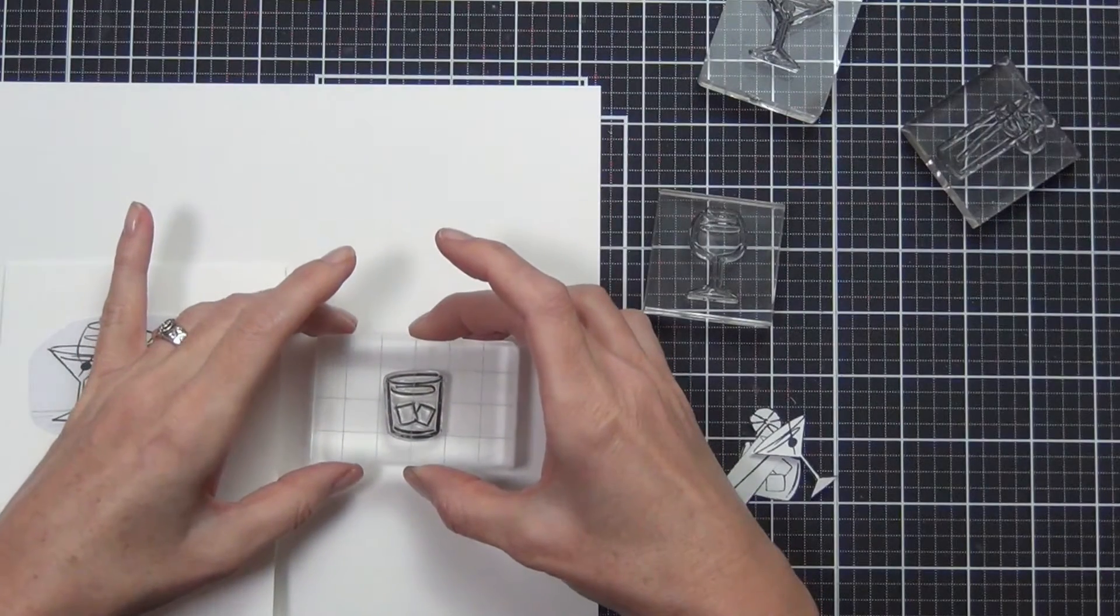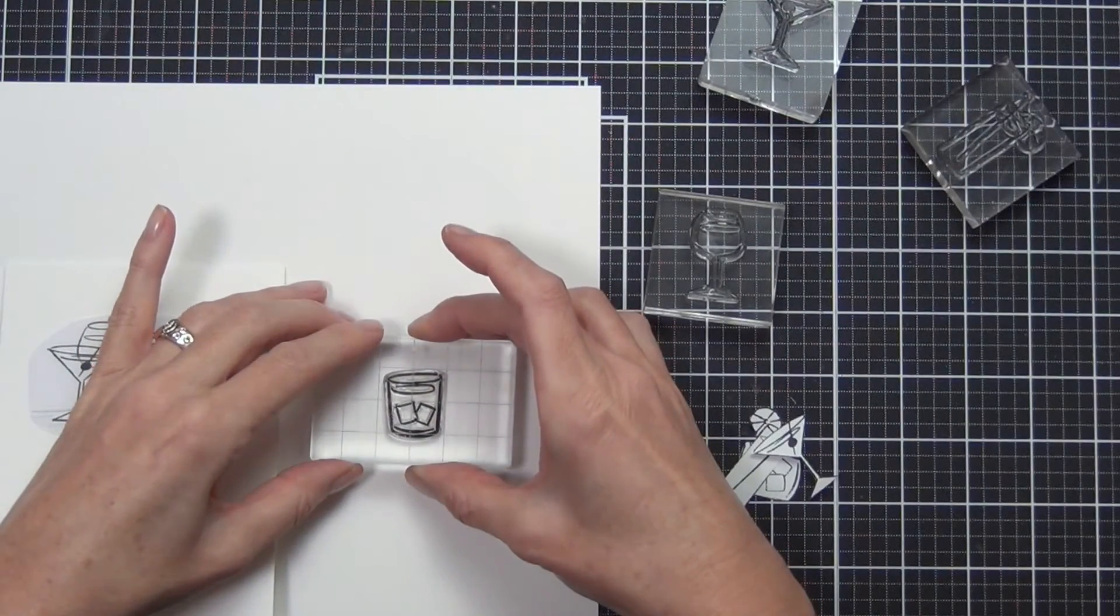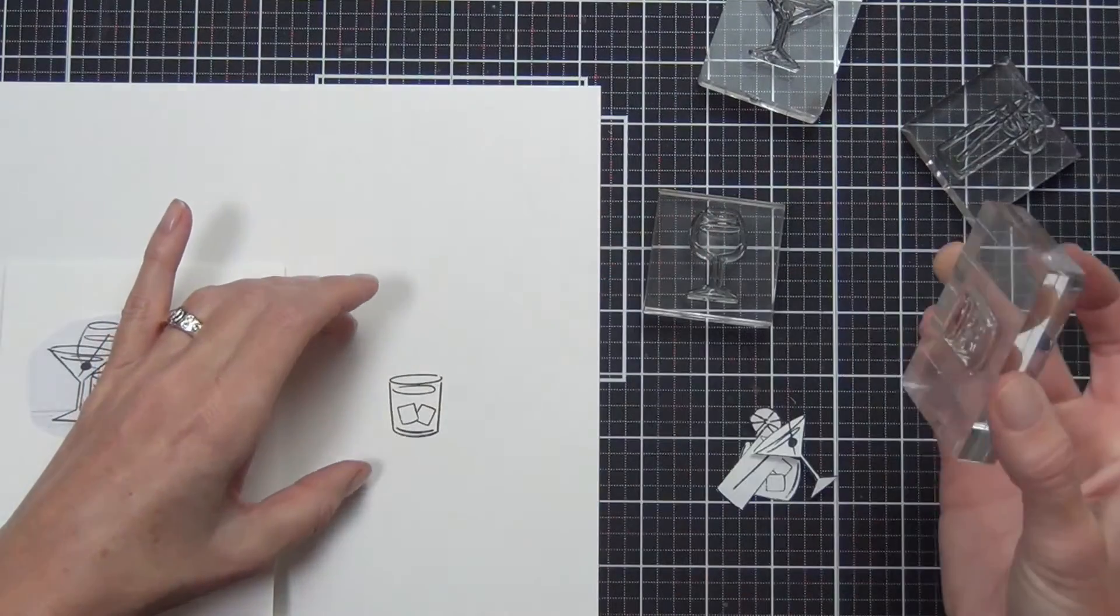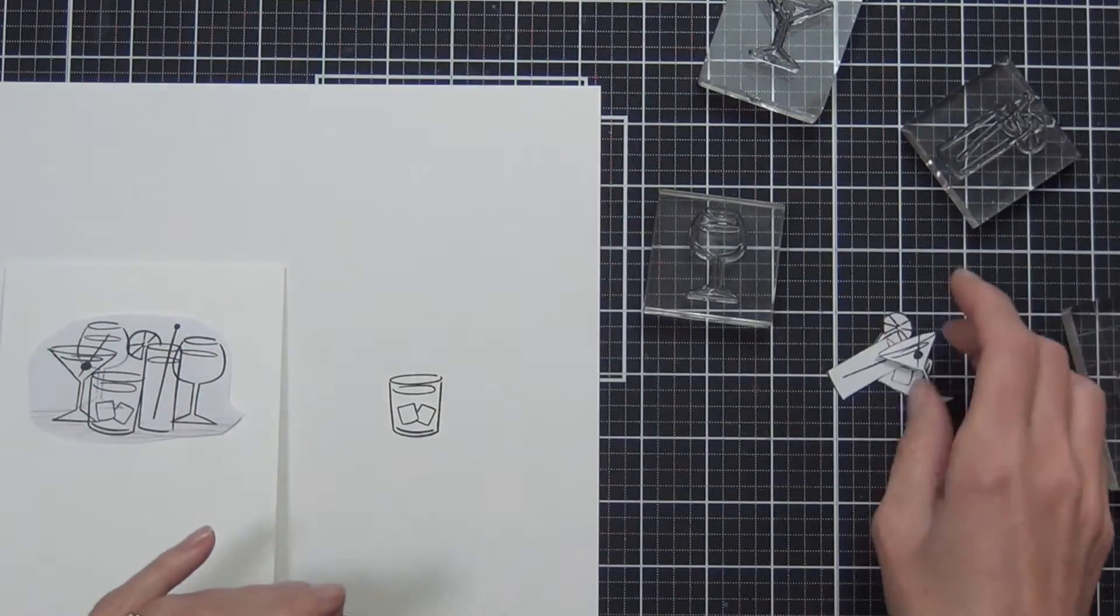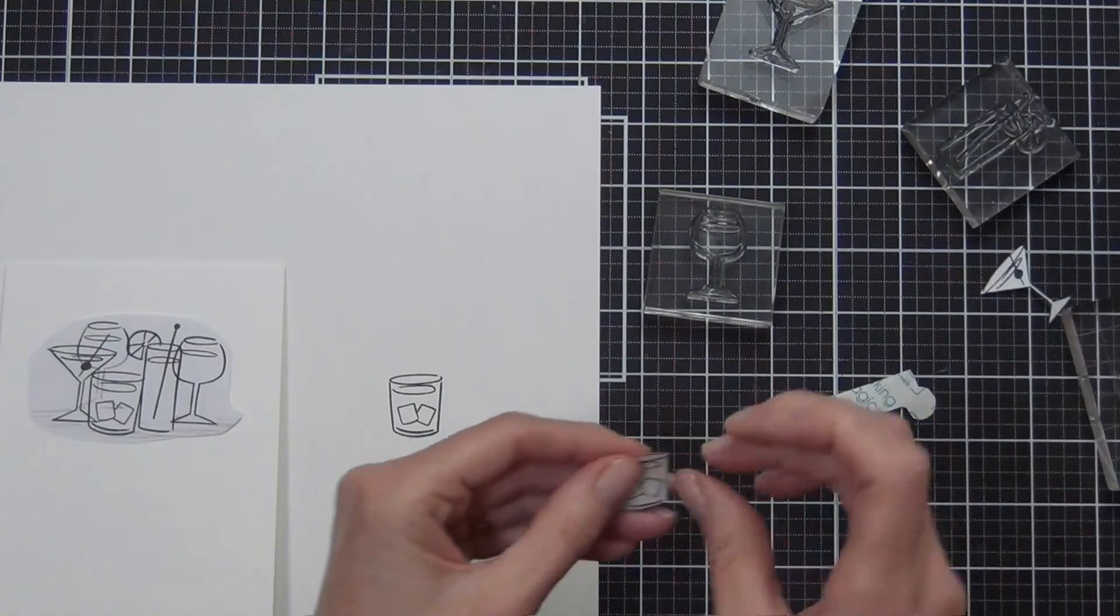What I did was stamp out the little scene that I was going to create first on some copy paper, and this just helps me work out which images I need to stamp first.